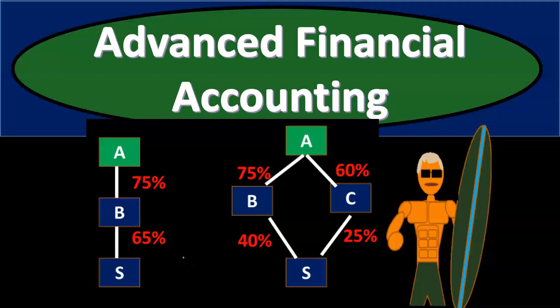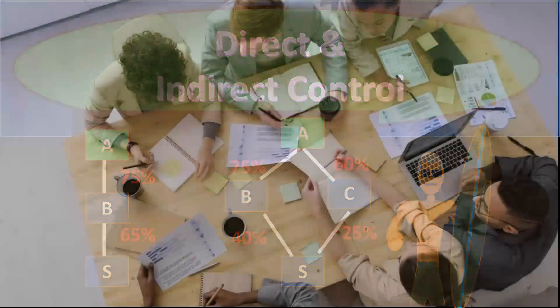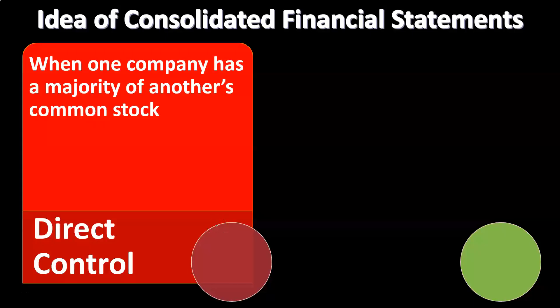In this advanced financial accounting presentation, we're going to talk about the concepts of direct and indirect control, considered within the context of financial statements and consolidation. When we have consolidated financial statements, the idea is to put two financial statements together when one company has control over another — typically defined by having more than 51 percent interest, because with over 51 percent you have a voting majority and would win any vote.